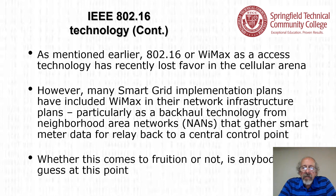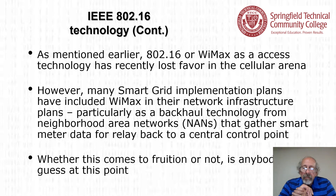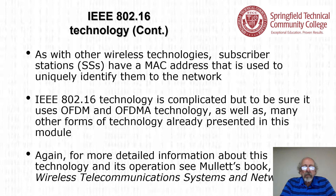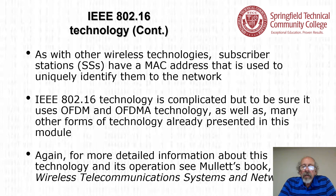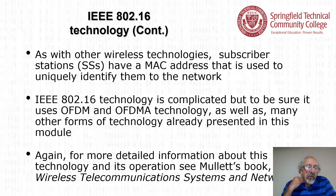802.16 or WiMAX's access technology has recently lost favor in the cellular arena. However, many smart grid implementation plans have included WiMAX in their network infrastructure, particularly as a backhaul technology from neighborhood area networks (NANs). These NANs gather smart meter data for relay back to a central control point. As with other wireless technologies, subscriber stations have a MAC address used to uniquely identify them to the network. IEEE 802.16 technology is complicated but uses OFDM and OFDMA technology as well as many other forms of technology presented in this module.